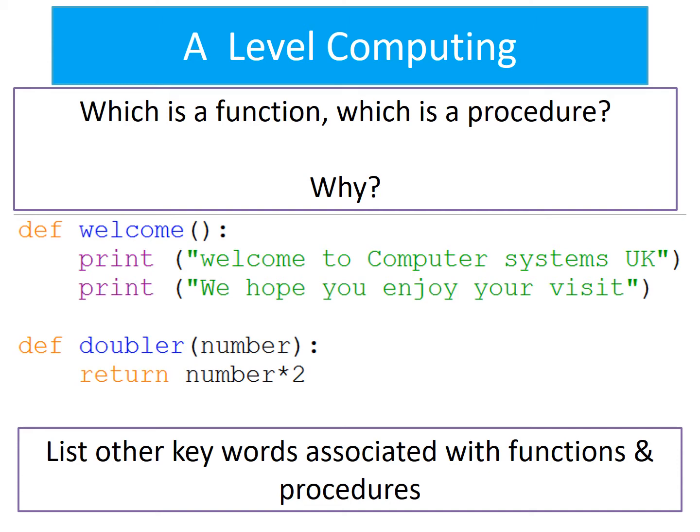A function always returns a value to your main code. If we're using a series of functions, each of these will have one task. They will return a value to your main code that you can use later on. A procedure, although it only has one task, doesn't actually send anything back to your work.